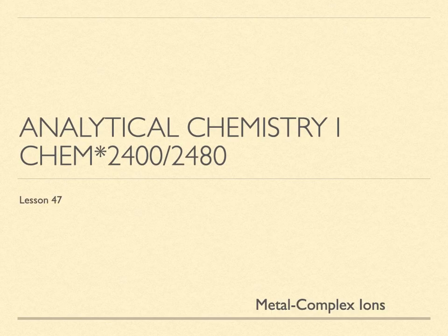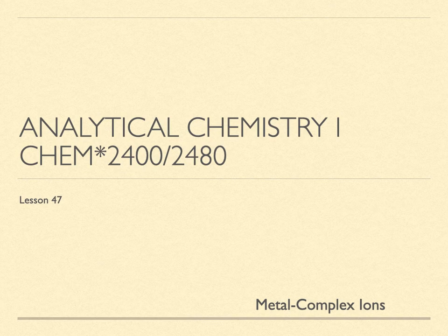Analytical Chemistry 1, Lesson 47. Metal cations in solution have lost some or all of their valence electrons. They are well suited to accept electrons from other molecules. They are called Lewis acids, as they can accept a pair of electrons to form a bond with another molecule.